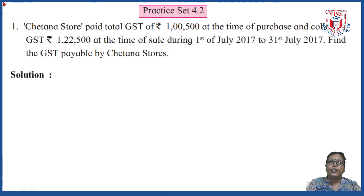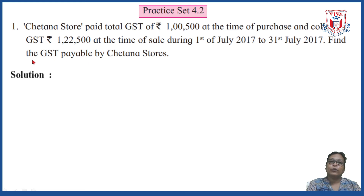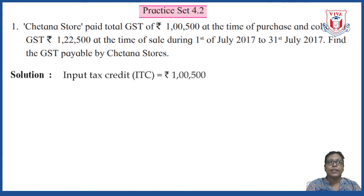Recall the formula: GST payable equals output tax minus ITC. The tax paid at the time of purchase is called ITC, so rupees 1,05,000 is the ITC. The tax collected at the time of sale is the output tax, so rupees 1,22,500 is the output tax.